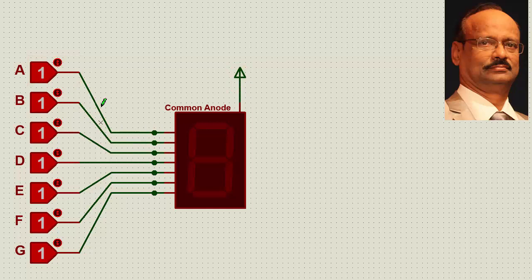And for the limbs, the seven limbs, we are given also logic 1, that is positive. Now we will see how the seven segment works.